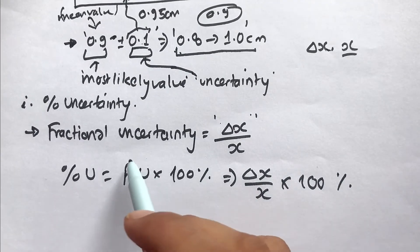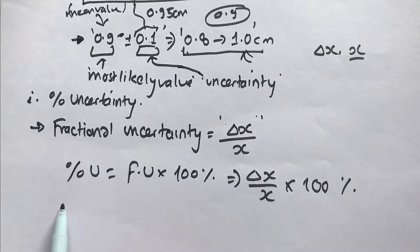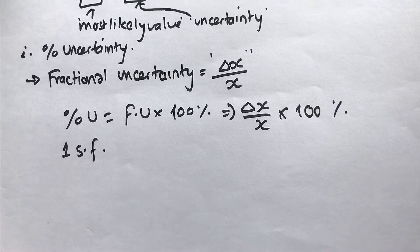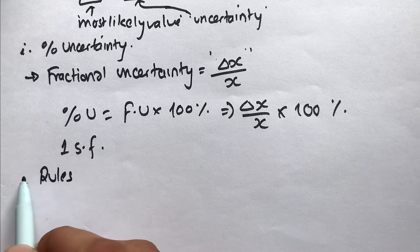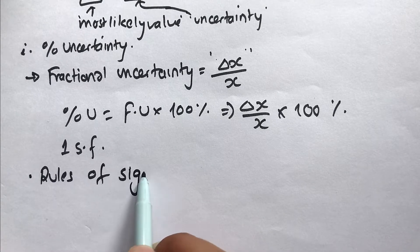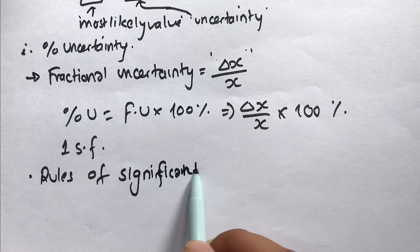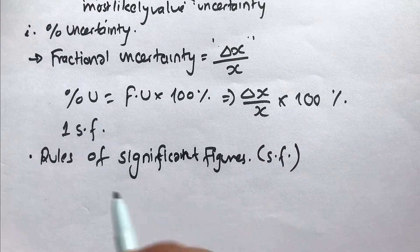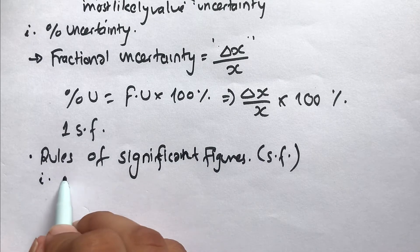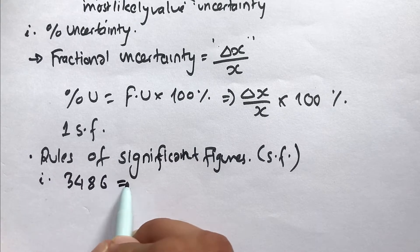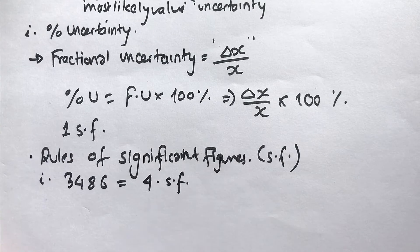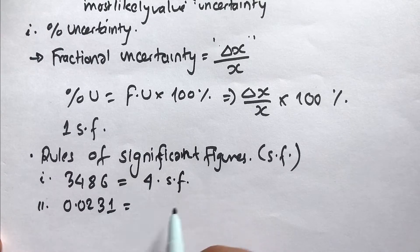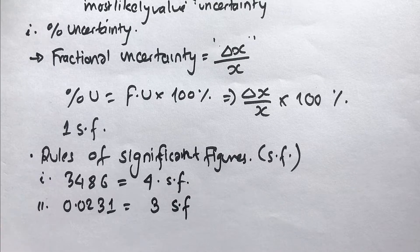Uncertainties are mostly written to one significant figure. So what are significant figures? Let's see some rules. If I have the number 346, that has three significant figures. If I have the number 0.0231, that has three significant figures — the starting zeros before a non-zero digit are not significant; only digits from one to nine are significant after the decimal place.